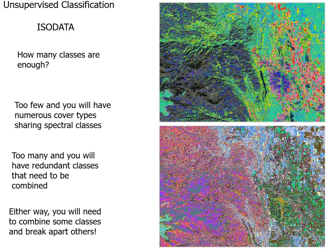Too few classes means numerous real-world cover types share a single spectral class, as we saw with water. Too many classes means you wind up with redundant classes — say four kinds of water — and then a lot of manual labor recoding 70 classes down to 12 in ArcGIS. Either way, you'll probably need to break up or combine classes before you have a final product you're comfortable with.